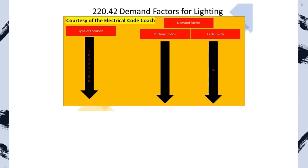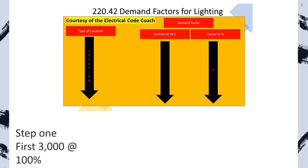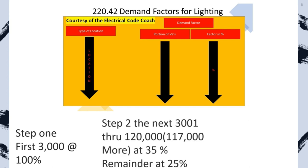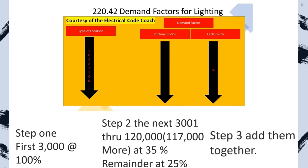For dwelling units, Table 220.42 has a multi-layered demand factor. Step one: take the first 3,000 VAs at 100%. Step two: take the portion between 3,001 and 120,000 — essentially the next 117,000 VAs — at 35%. Then take anything above and beyond that at 25%. Step three: add them back together. We take the original 3,000 we set aside, then add the new reduced load to get our total.